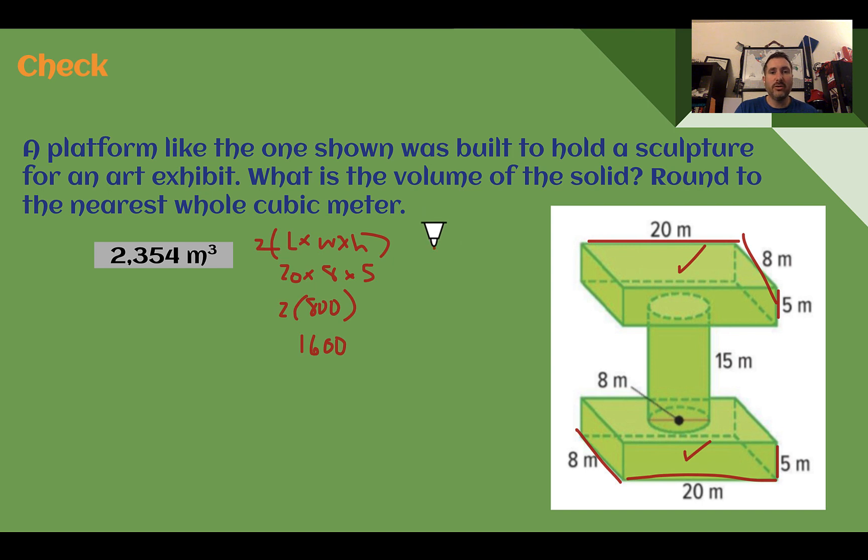For the cylinder, we need to do πr² times the height. So the height is 15. For our radius, it's showing the line across is 8, so we want halfway of 4. 4 squared is 16, 16 times 15 is 240, and we still have that pi symbol. Now I want to find my total volume, so I'm going to add those two together. This one is the only thing that has a pi symbol, so let's just multiply that out right now. 240 times π is 753.98. So let's just round that right now to the whole meter, so 754 plus 1600, and that gives you 2354, which is what they got.